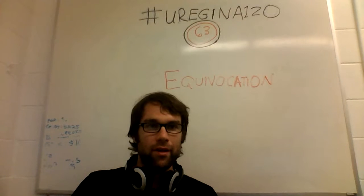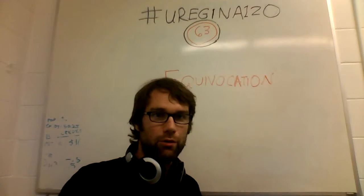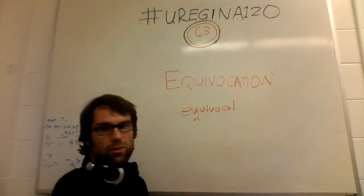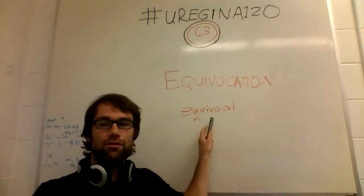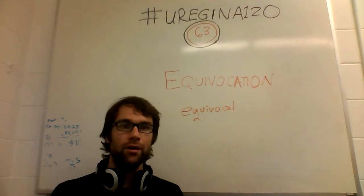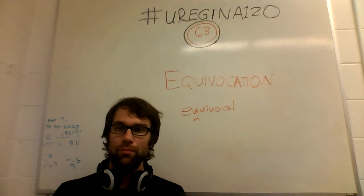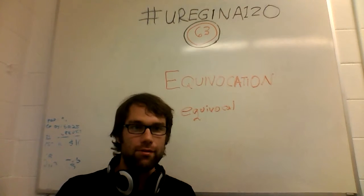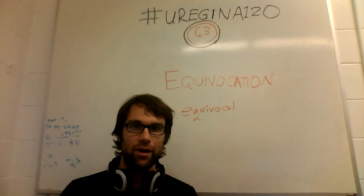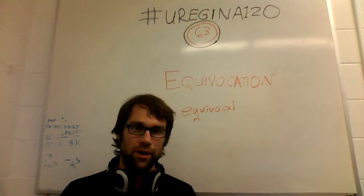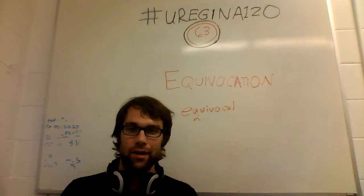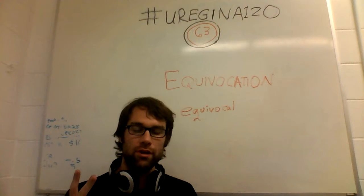There are words with multiple meanings. An example of such a word is the word 'equivocal,' which has two definitions: one, allowing the possibility of several different meanings for a word; or two, of doubtful character or being a suspicious character. An equivocation is the illegitimate switching of the meaning of a term during an argument or during some attempt of reasoning. You do this by using an equivocal word twice in the same argument, each time using different meanings.